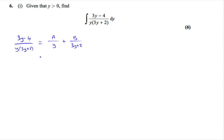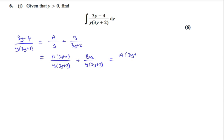The common denominator is y(3y+2). Multiplying the first fraction by (3y+2)/(3y+2) and the second by y/y gives a single fraction. Because the denominators are the same, we can equate the numerators: 3y - 4 equals A(3y+2) plus By.